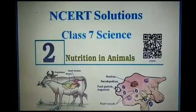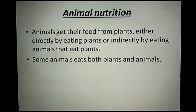So, how do animals get their nutrients and nutrition? Animals get their food from plants, either directly by eating plants or indirectly by eating animals that eat plants. That means, directly or indirectly, animals depend on plants for their nutrition.